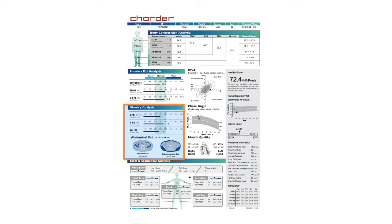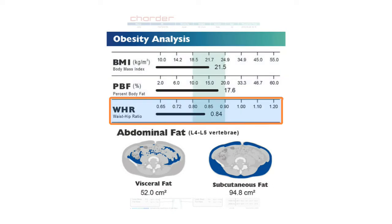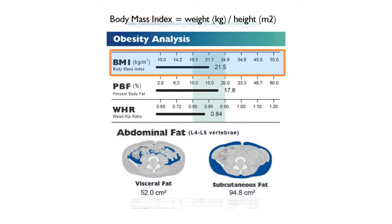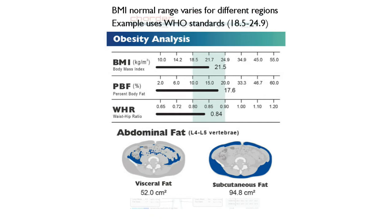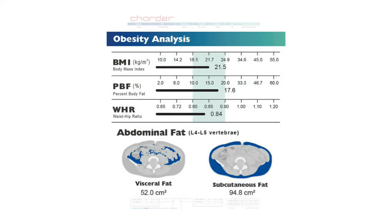Let's move to the obesity analysis section, which includes body mass index, percent body fat, waist-hip ratio, and abdominal fat. BMI is one of the most common methods used to calculate obesity risk because it's relatively easy to calculate — all you need is height and weight. The problem with BMI is that it doesn't distinguish between the source of weight, so two people of the same height and weight are categorized as having the same risk level, even if one person is mostly muscle and the other is mostly fat. Generally, we'd recommend using percent body fat to evaluate obesity instead.